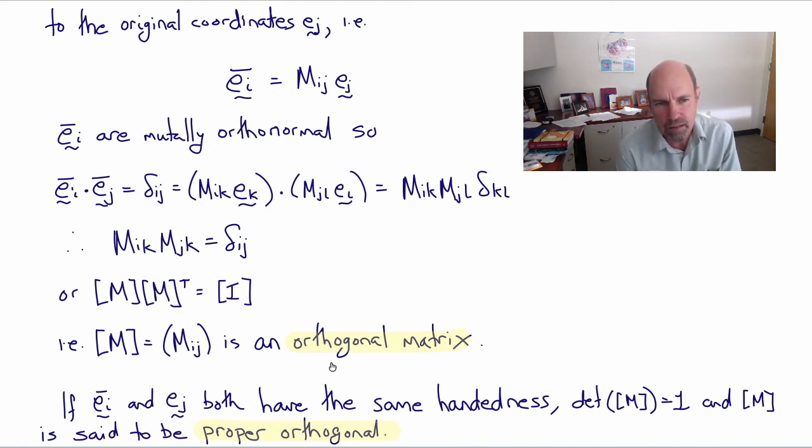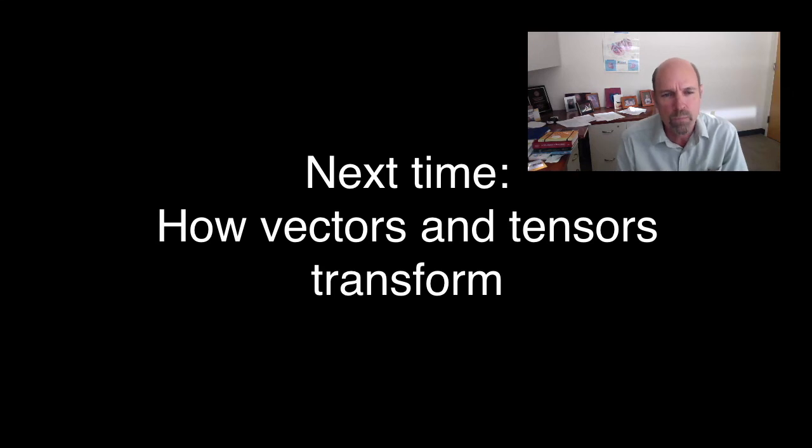Recognizing that a translation doesn't affect the components of a vector and assuming that everyone is using a Cartesian frame of reference with the same handedness, the only difference between one frame of reference and another is a rotation, which is an orthogonal transformation. So we can now go on to use that orthogonal transformation to define the relationship between the components.